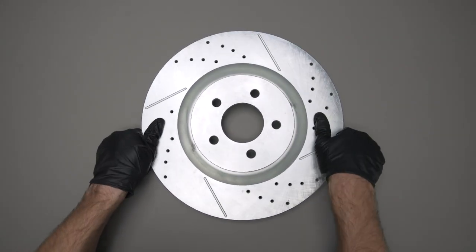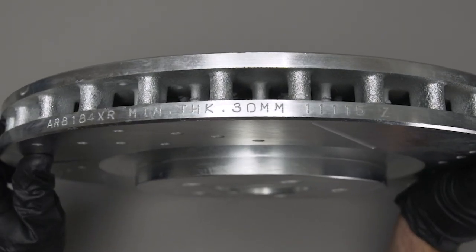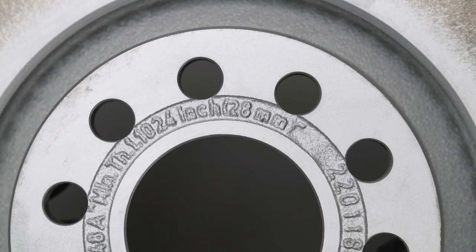Looking to cut your rotors or worried they've worn too far? You can find the minimum operational thickness engraved on the side of the rotor, within the veins of the rotor, or on the hat of the rotor.